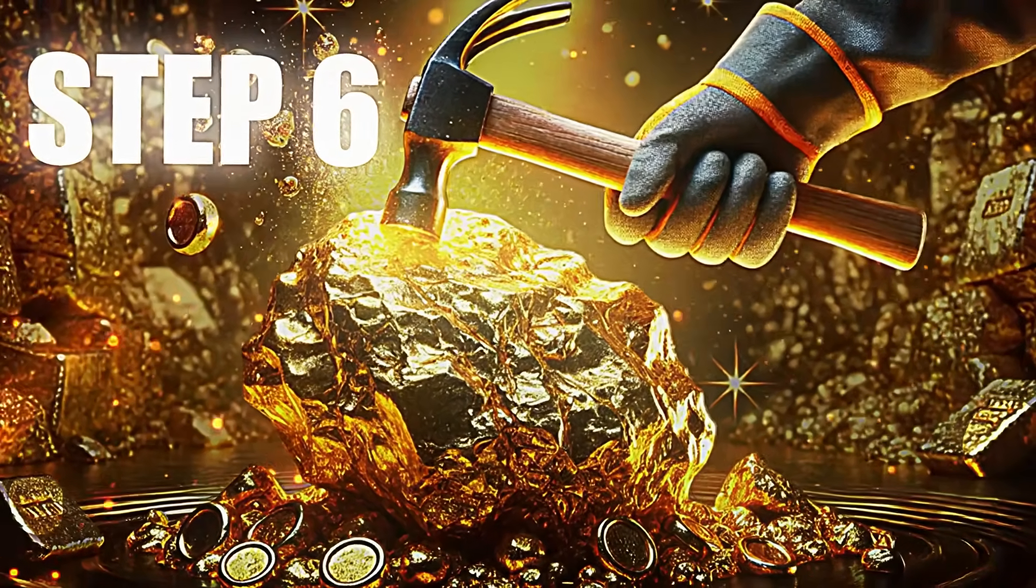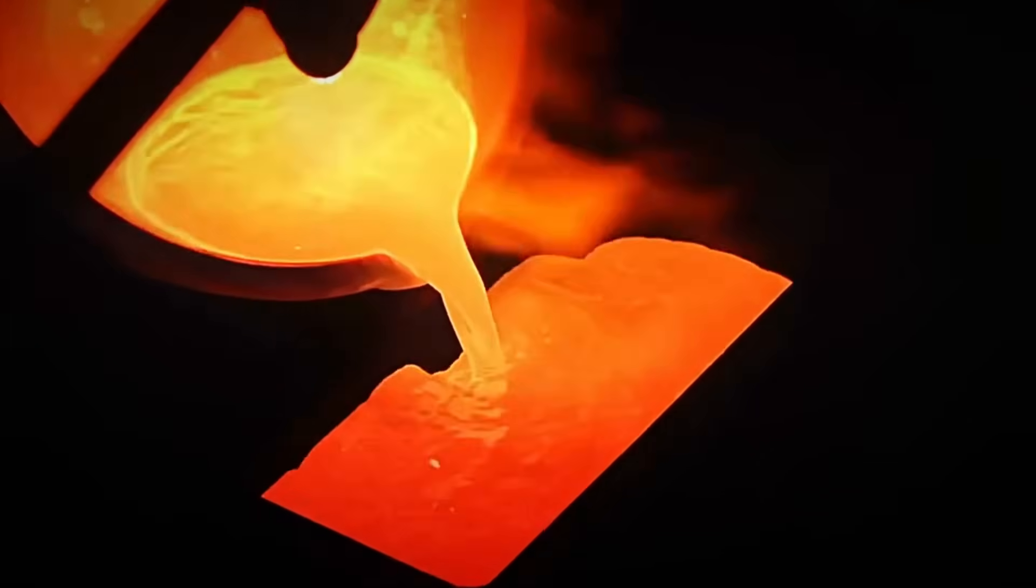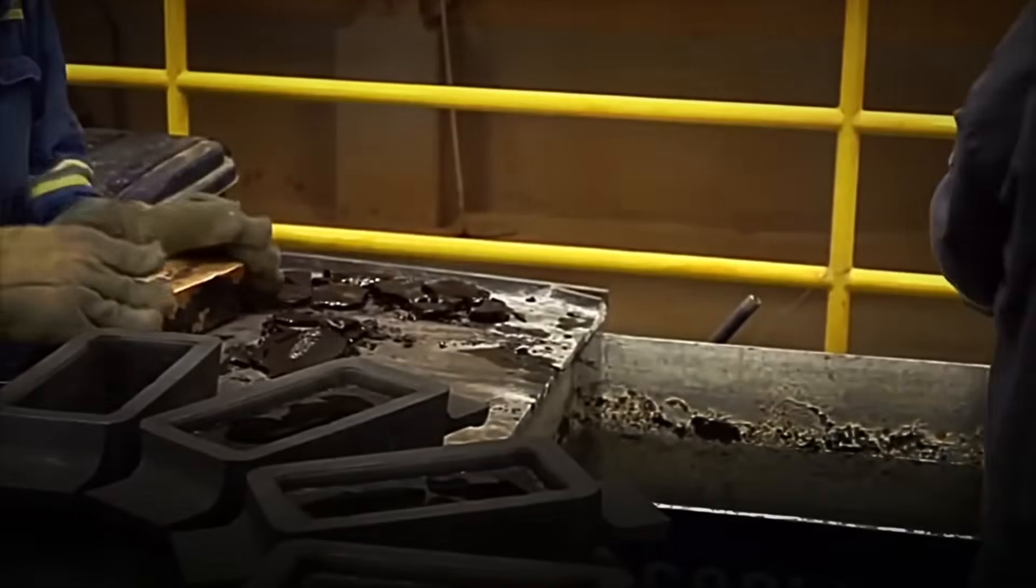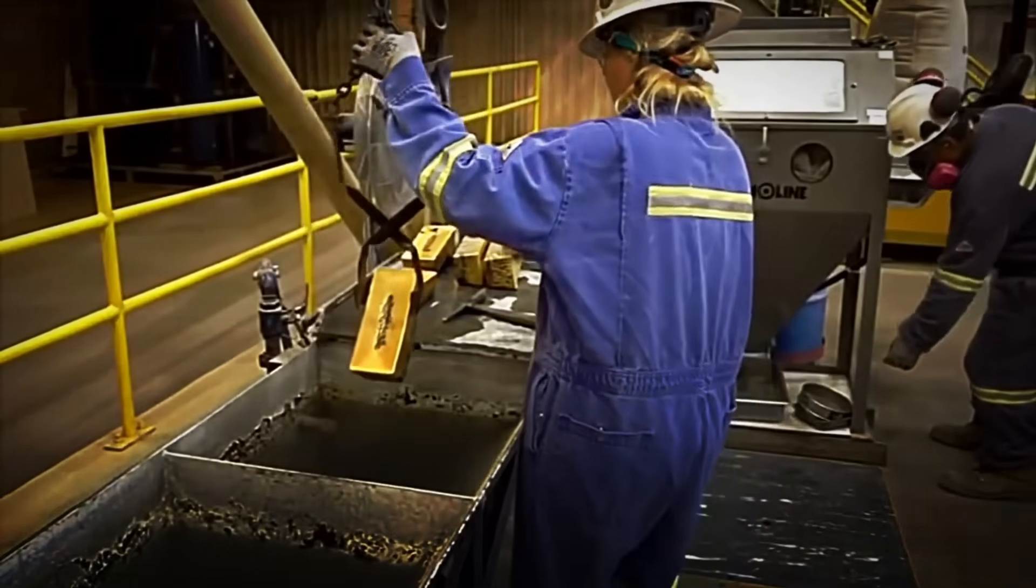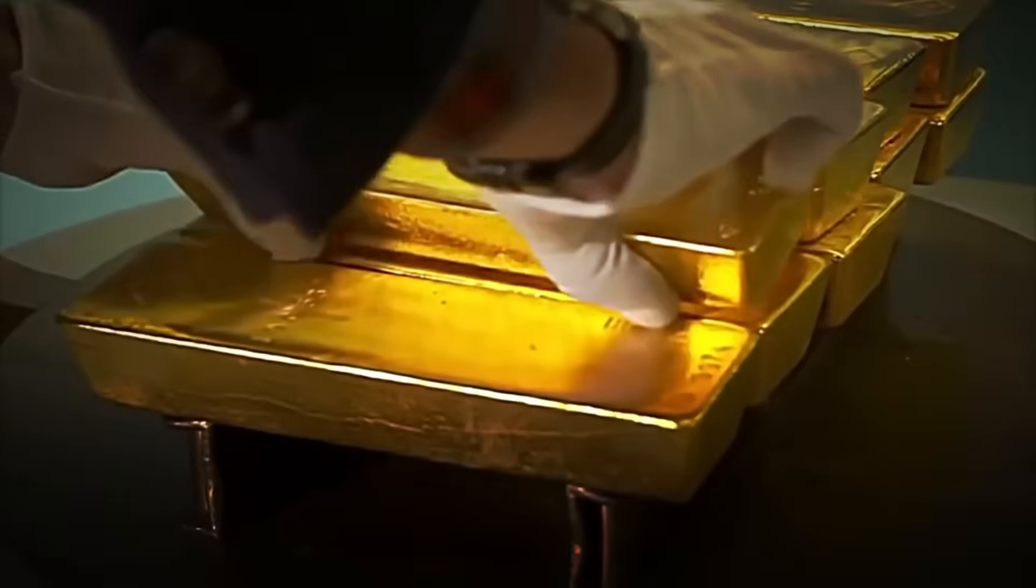Step number six: Molding into Ingots. After the entire refining process, it's time to transform all this gold into ingots. The refined gold is melted again at extremely high temperatures, and then carefully poured into special molds that give it a rectangular shape.